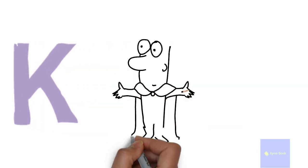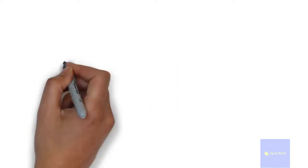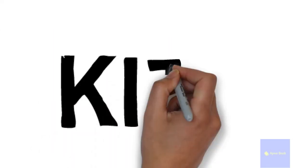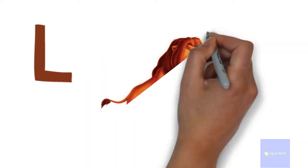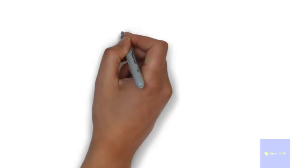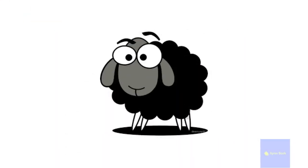K for king, K for kite. L for lion, L for lamb.